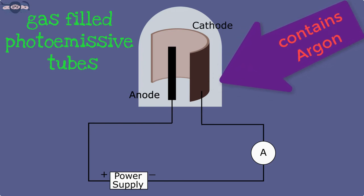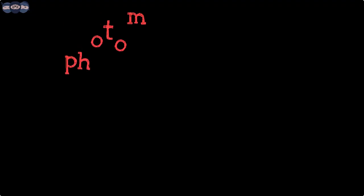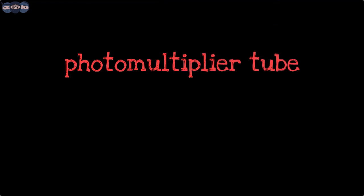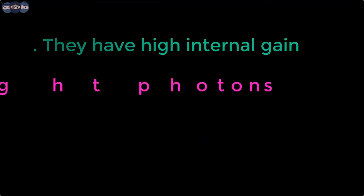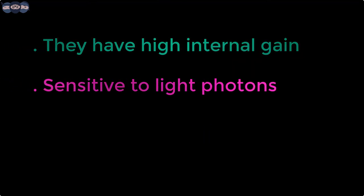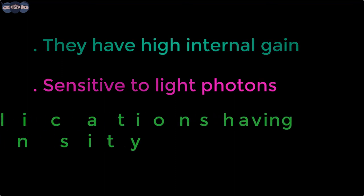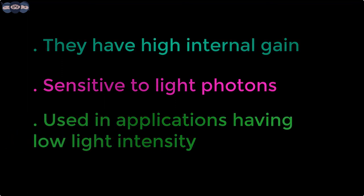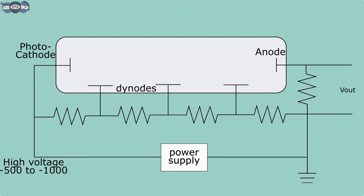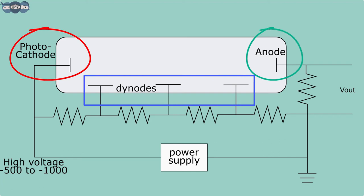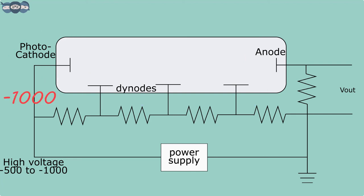The next photoemissive detector is a photomultiplier tube, also known as PMT. PMTs have high internal gain and are very sensitive to light photons. They are generally used for applications where light intensity is less, such as fluorescence spectroscopy. The tube consists of a photosensitive cathode, multiple dynodes, and an anode. The dynodes are placed at increasing potentials from cathode to anode.